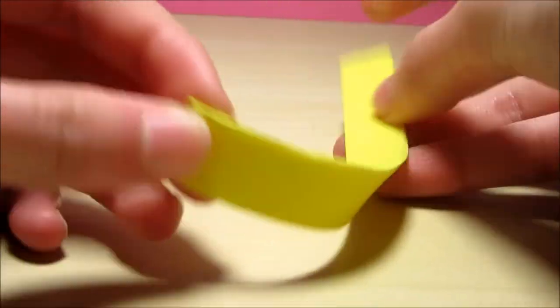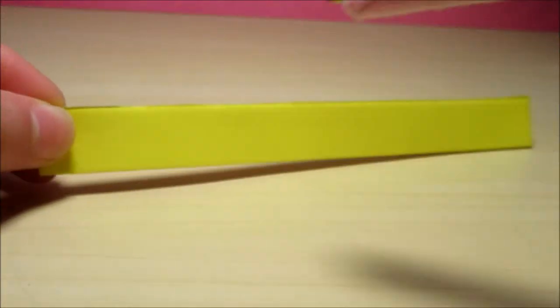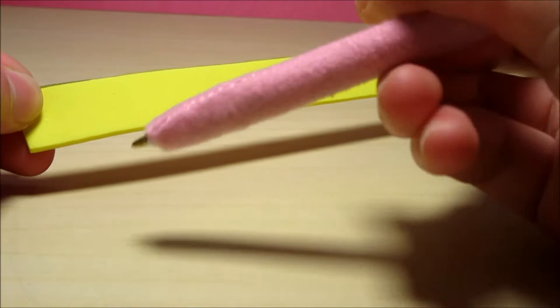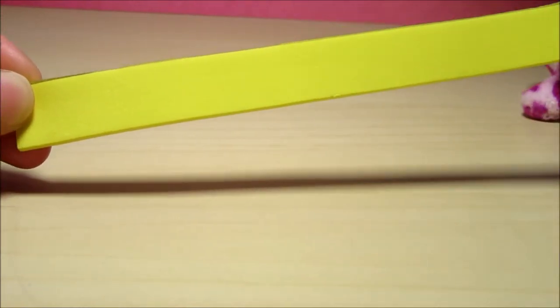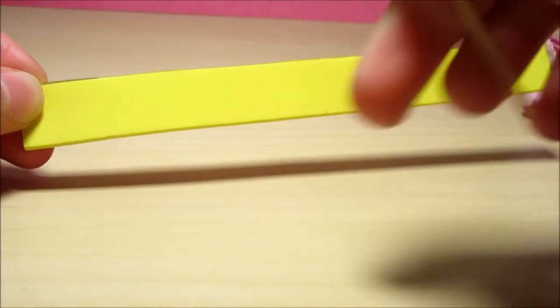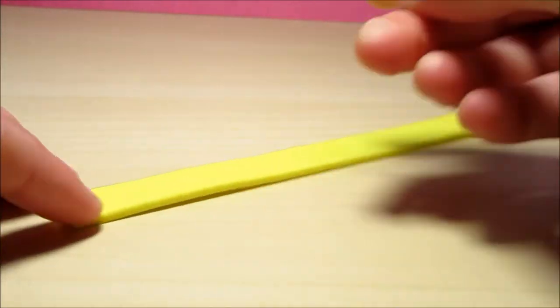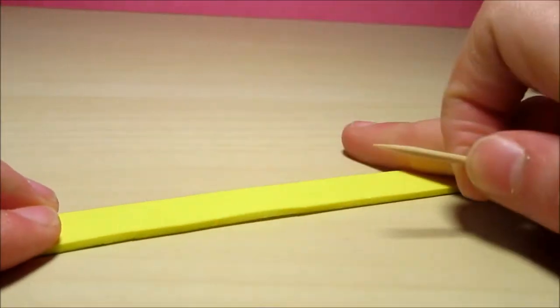Now that I have my strip all cut out, this is the time that you can add detail if you want. You can either use a pen and draw lines to make it checkered like an actual Easter basket, or you can take a toothpick and you can just sort of score it on the good side.